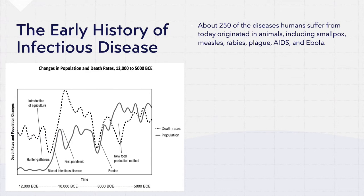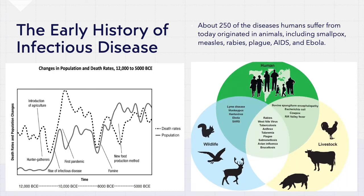In settling down, our species supported the spread of intestinal parasitic infections, which came about from the contamination of water supplies owing to the large quantities of human waste we began producing. In addition to this, the domestication of animal species brought us into much closer contact with poultry, dogs, cattle, mice, rats, pigs, horses, sheep, cats, and goats, all of which suffered from their own diseases. With the passage of time, many of these diseases jumped from animal to human form.